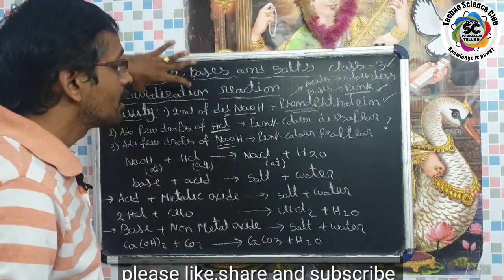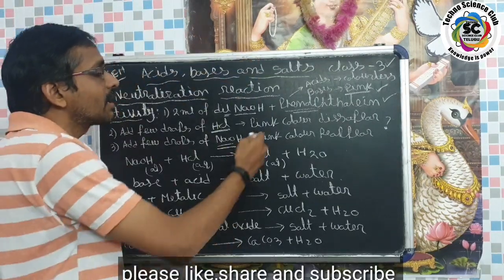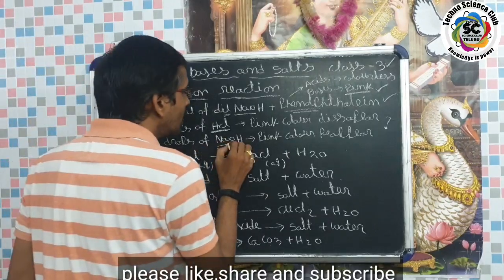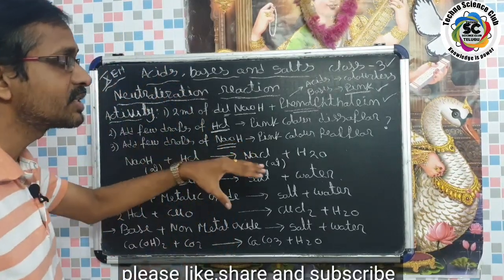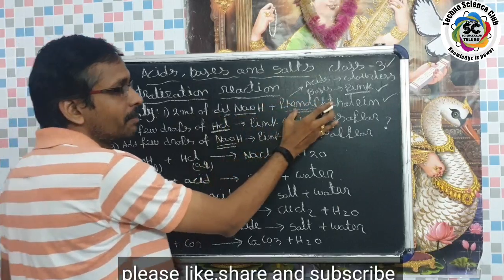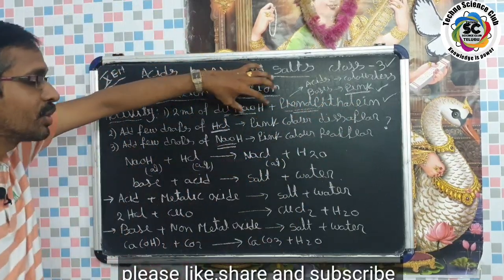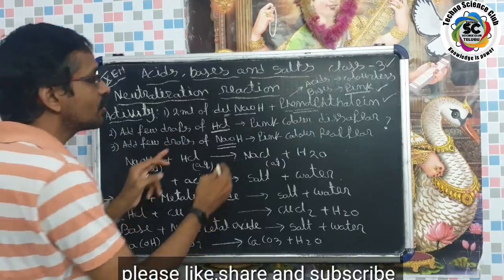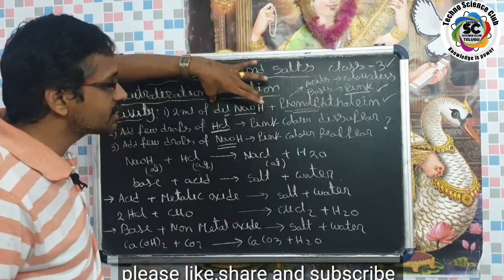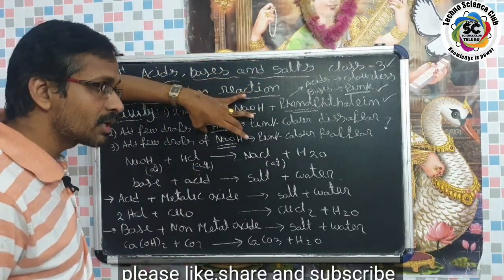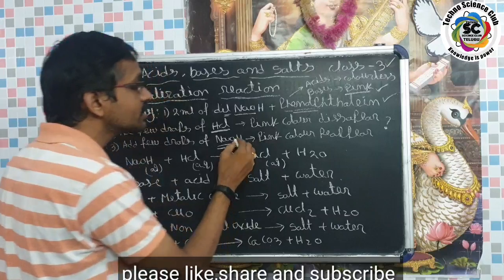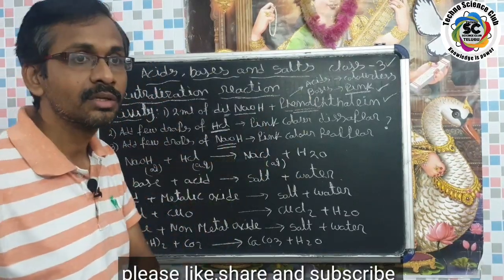Because of the neutralization reaction, the pink color disappears and a colorless solution is formed. The first solution was a basic solution — dilute NaOH — which is basic. Adding dilute HCl causes a neutralization reaction, making the solution neutral. After adding NaOH again, it turns back to a basic solution.